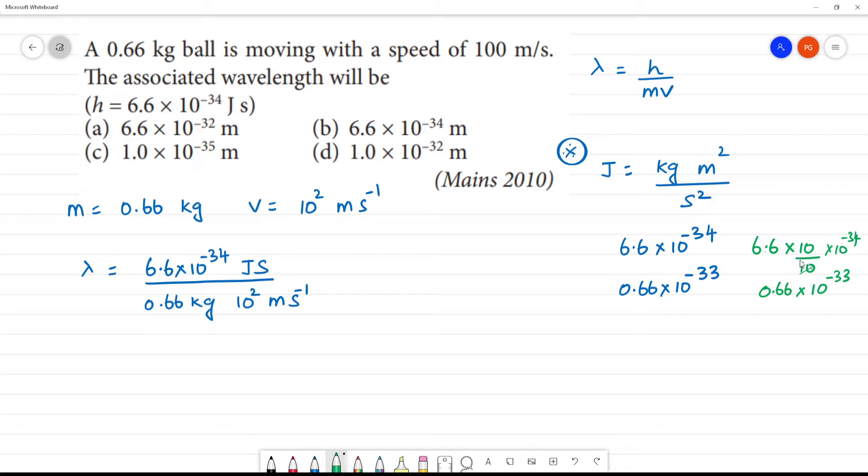Multiply and divide by 10, the same number is 1. What we need to do is 0.66 into 10 to the power minus 33 kilogram meter square by second square.